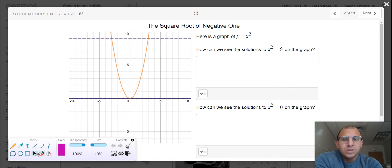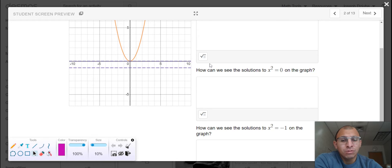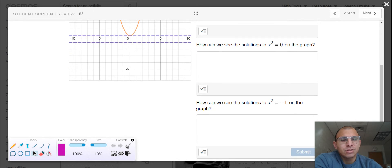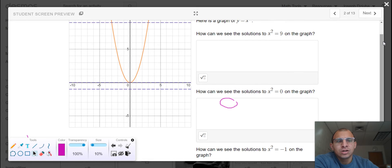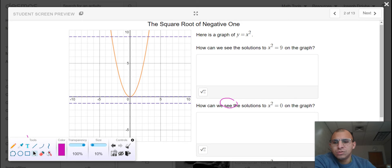So we're going to do a bit of exploring to begin. Here is a graph of y equals x squared. I would like for you to detail how we can see the solutions to x squared equals nine on the graph, so this dotted purple line, how we can see the solutions to x squared equals zero on the graph, and how we can see the solutions to x squared equals negative one on the graph. And most importantly, do your best to detail how you can see the solutions to those three different equations using this graphical representation to support you.